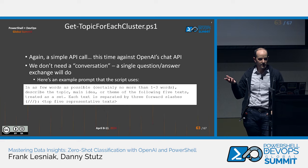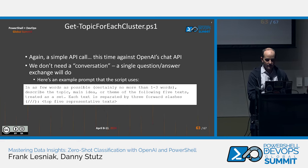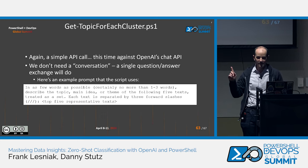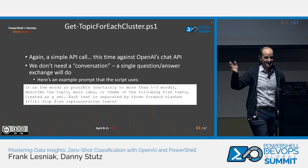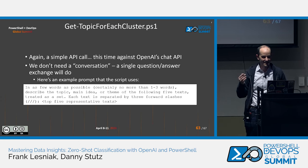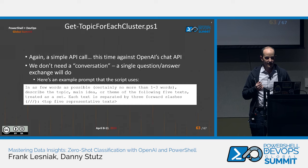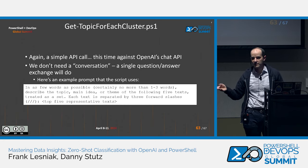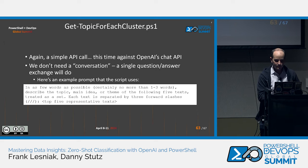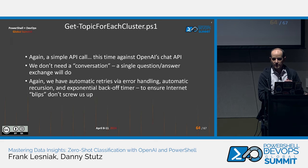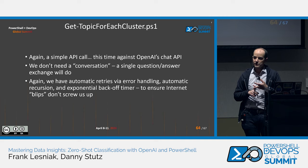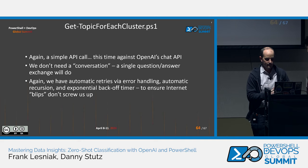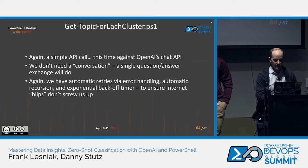Here's an example prompt. We say 'in as few words as possible, certainly no more than one to three words' — because ChatGPT is a line-stepper and will sometimes tell me five even if I say one to three. 'Describe the topic, main idea, or theme of the following five texts treated as a set. Each text is separated by three forward slashes.' Then we list them out with three forward slashes separating them — or if there are three forward slashes in the text data, we have an algorithm to dynamically select something else. We also have the automatic retry logic again for terminating or non-terminating errors. Hopefully the internet gods are with us.